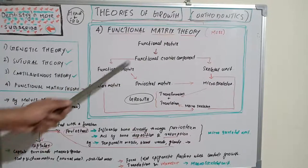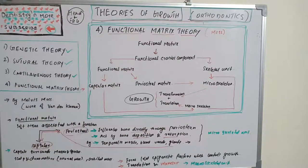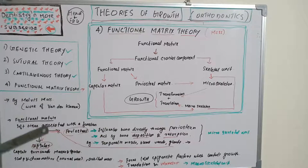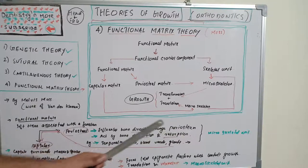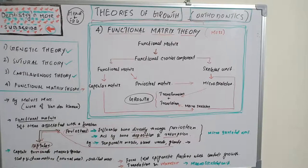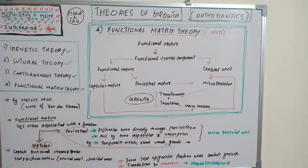The periosteal matrix directly influences bone through the periosteum, causing bone deposition and resorption — known as transformation. The periosteal matrix acts on microskeletal units, which are just parts of bone. Examples of periosteal matrices include the temporalis muscle, blood vessels, and glands, which cause transformational growth changes in the bone they surround.